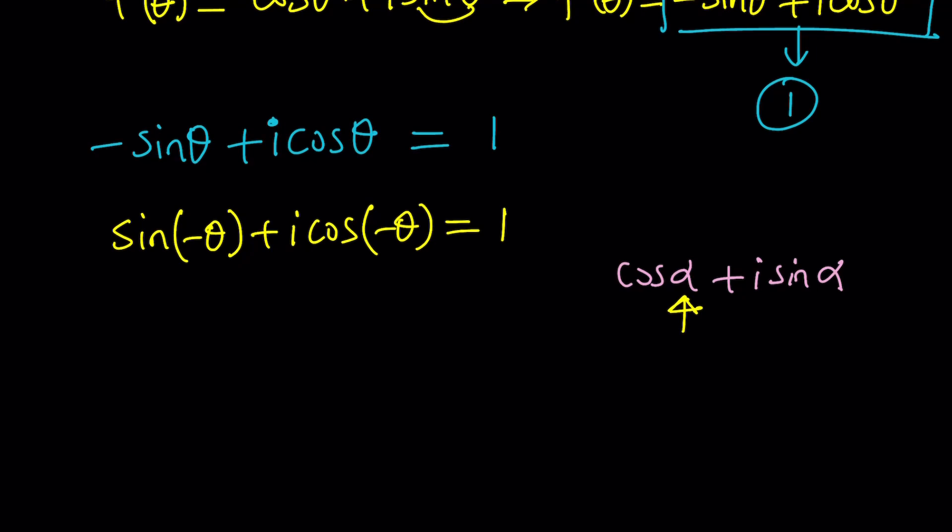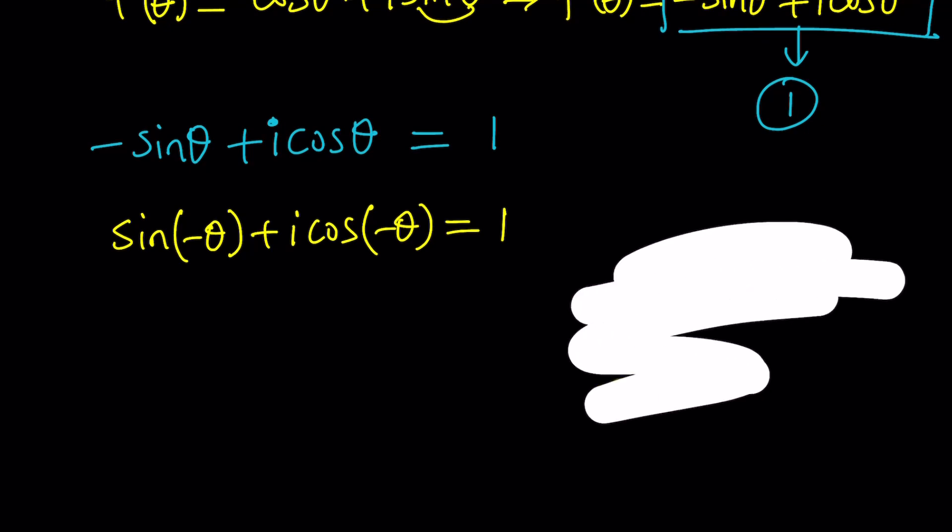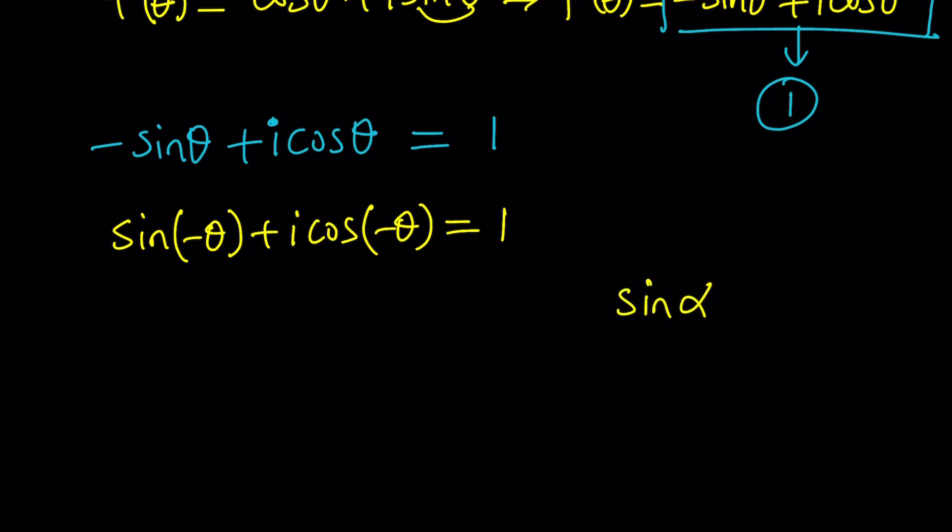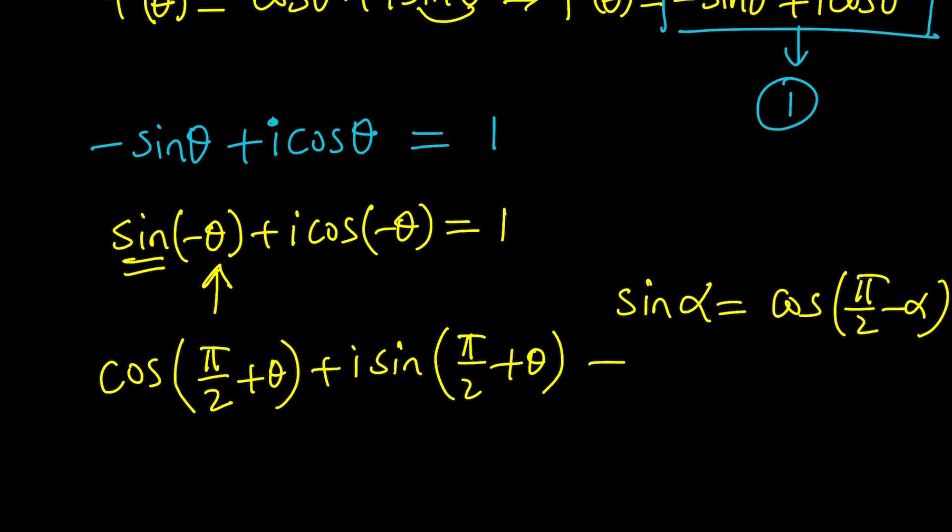Now you do the sine-cosine conversion, the co-function identity. If you have sine of α, you can write it as cosine of π/2 minus α. Because these two angles are complementary, then we have this identity. If I want to change the name from sine to cosine, all I have to do is subtract this angle from π/2, but the double minus sine will give us a plus sine, and the same thing goes for cosine. And this is equal to 1. Beautiful.